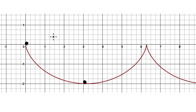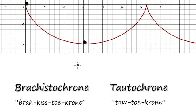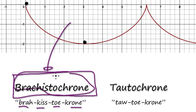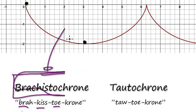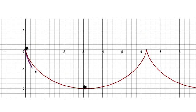As it turns out, this path here is actually the shortest time. Because it's the shortest time, we say that the cycloid is what's called the brachistochrone — the quickest path from A to B is actually a cycloid.